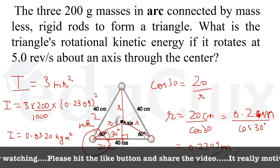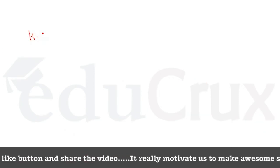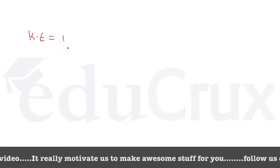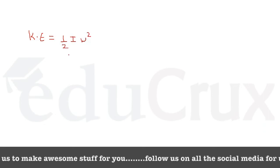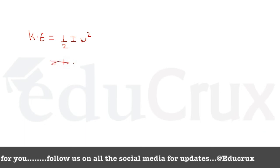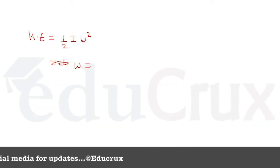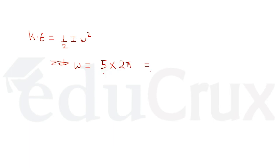We have calculated I. Now for kinetic energy, the formula is half I omega squared. Omega is given as 5 revolutions per second. In one revolution you have 2 pi radians, and it's per second so we don't divide by 60. So omega is 10 pi radians per second. Kinetic energy equals half times I which is 0.0320 times omega which is 10 pi, squared.